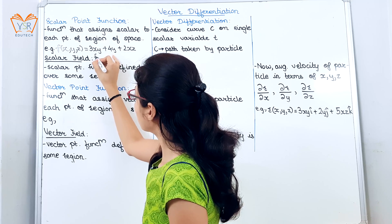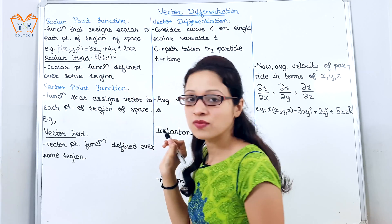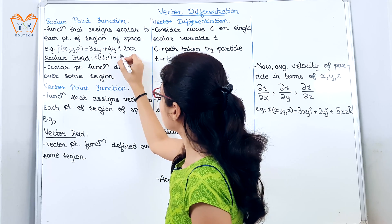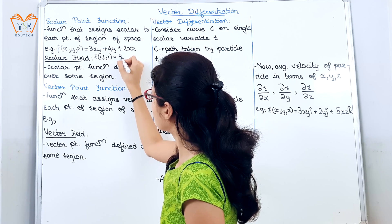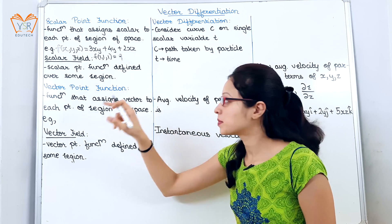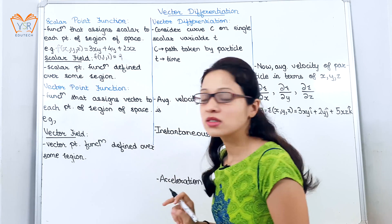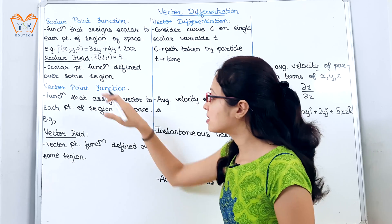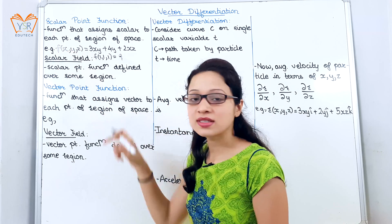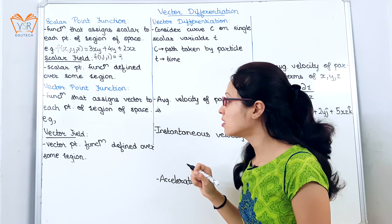We simply substitute the values x = y = z = 1. So 3 + 4 + 2 gives 9. The output is a scalar quantity — that is a scalar field. A scalar point function defined over some region simply means that the region from which the values of x, y, z are chosen is the scalar field or scalar region.